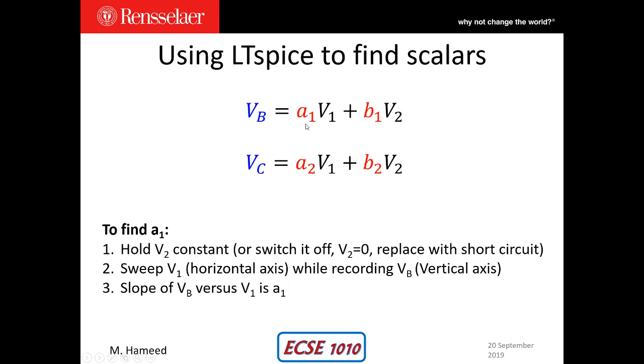So in order to observe the slope, we sweep V1 and we are going to observe V1, the changes in V1 on the horizontal axis, and we will look at or record VB on the vertical axis. So let's see how we can do that using LTSpice.